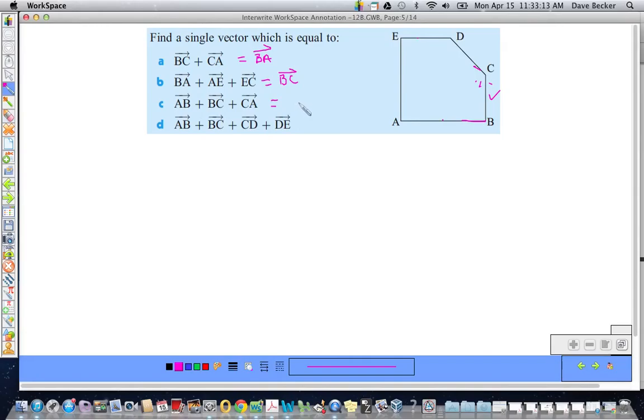So, that is just vector AA. That's weird, isn't it? Vector AA. Well, vector AA starts and ends at A. So, that is also the zero vector.